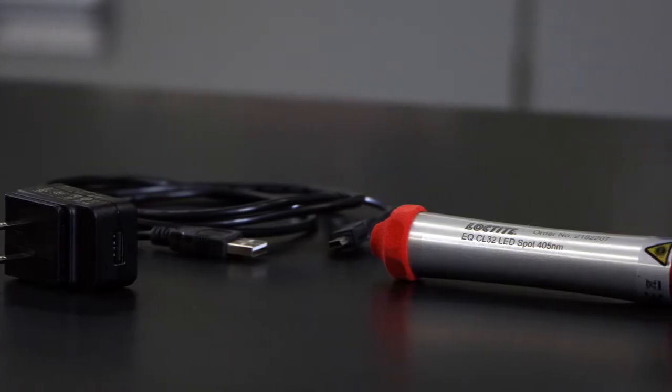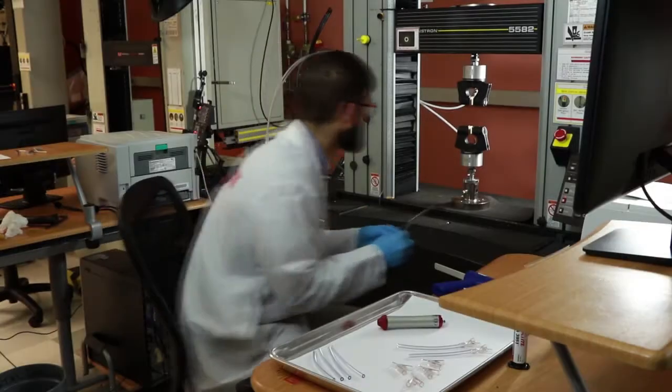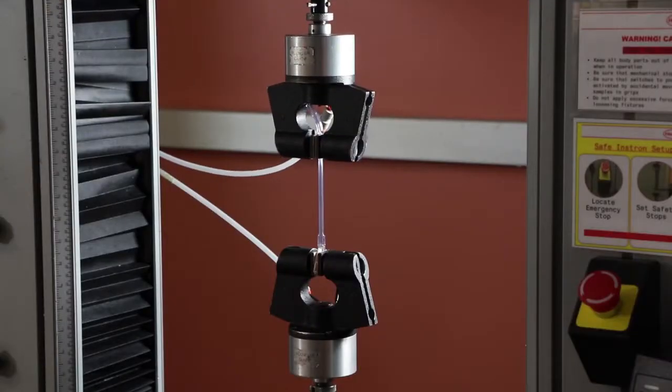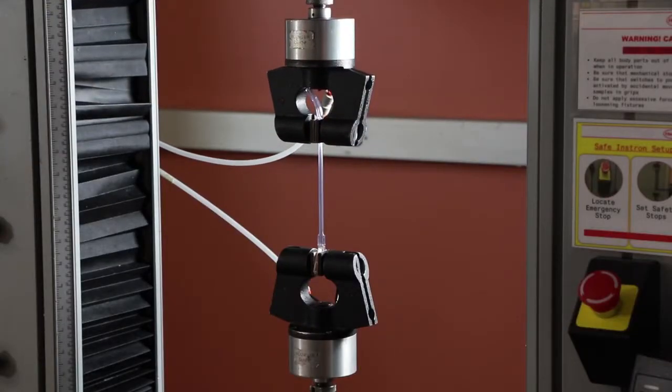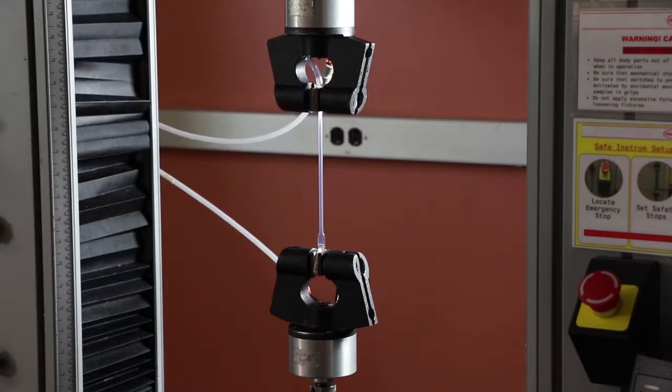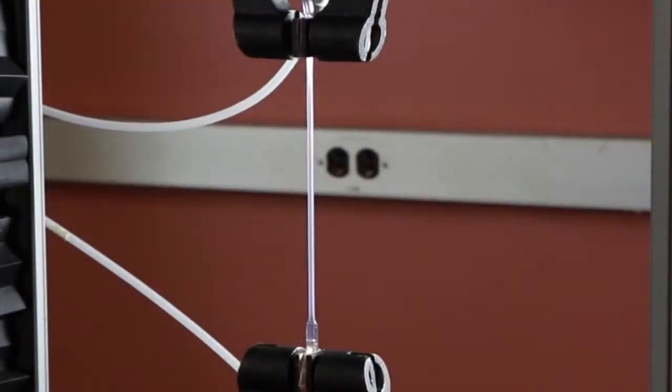The Instron tester is used to determine bond strength of the assembly in shear mode. The PVC tube stretches and elongates and the adhesive holds strong, eventually the weakened PVC tubing breaks while the bond holds strong.